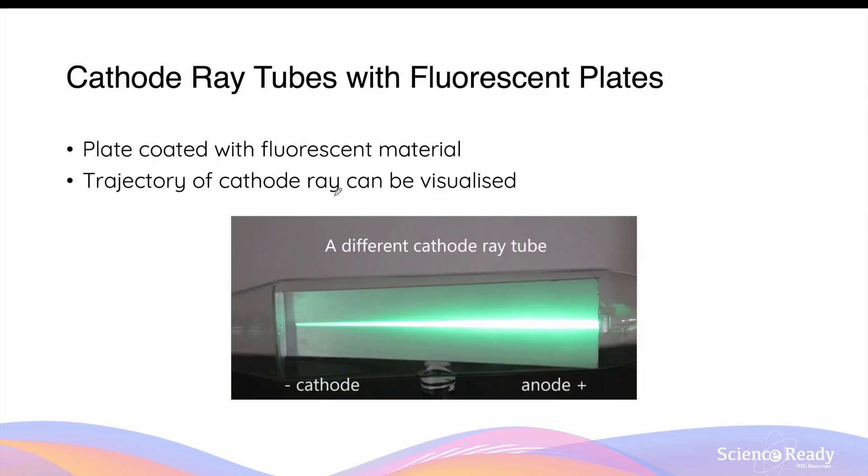Experiments using cathode rays were also conducted using fluorescent plates. In the cathode ray tube, a long plate is coated with a fluorescent material to help us visualize the trajectory of the cathode ray. In this diagram, the cathode ray is produced on the cathode which is negative and travels towards the anode which is positive. This can be visualized by the green streak of fluorescence that is enabled by placing the metal plate that is coated with a fluorescent material in the background. Normally the cathode ray would travel in a straight line, directly from the cathode to the anode.